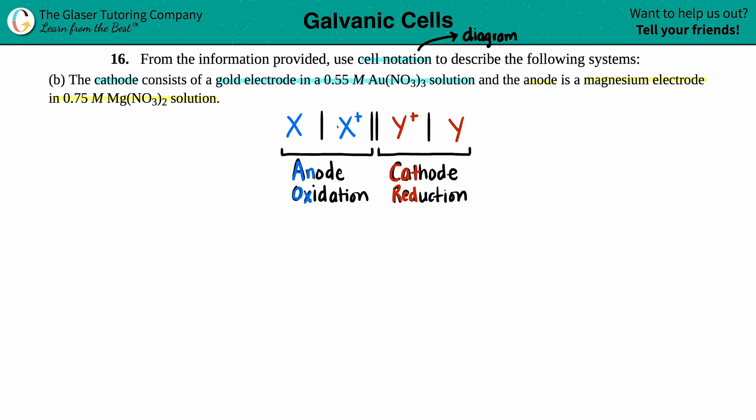Just know that anode in a galvanic cell always talks about oxidation. You can memorize this by knowing ANOX. Oxidation is always a loss of electrons.